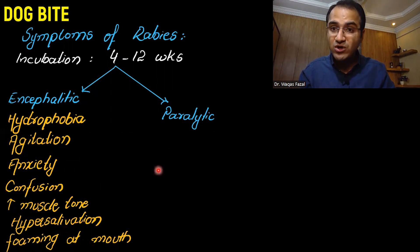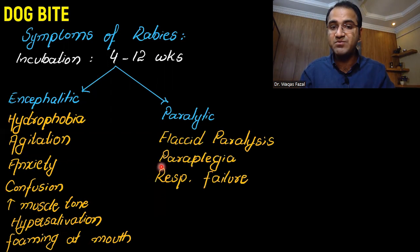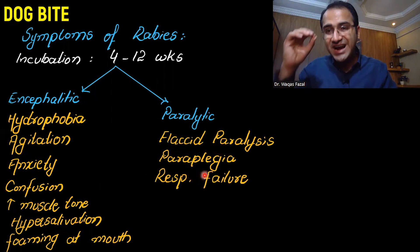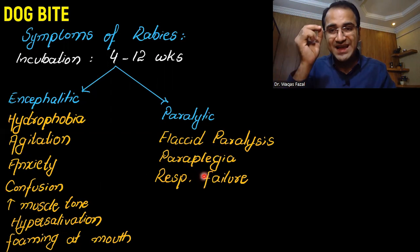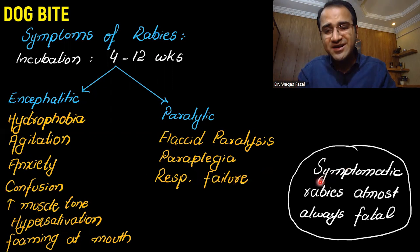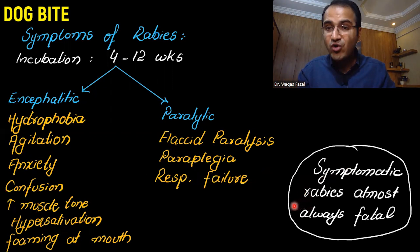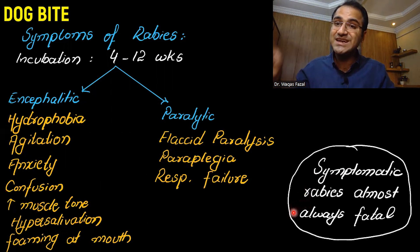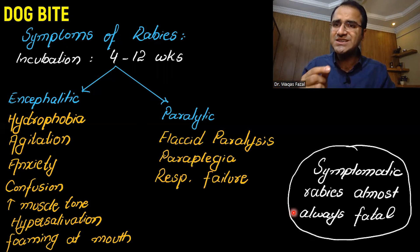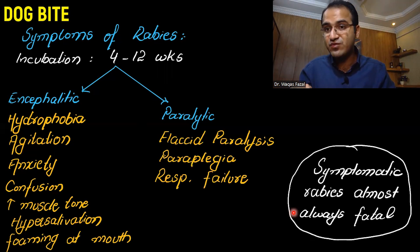Few patients can also develop a paralytic phase. In the paralytic phase, the patient develops flaccid paralysis, paraplegia, and ultimately respiratory failure and death. Remember, rabies is 100% fatal — symptomatic rabies is almost always fatal. So if a person gets a dog bite or any wild animal bite, you must consider rabies prophylaxis if there is indication for it.